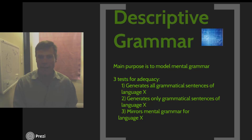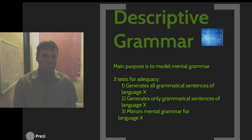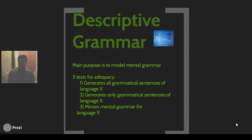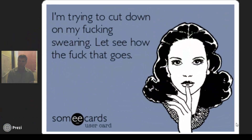It was only in about the last three decades where we find really serious research into taboo words and swearing. And so before that, because of that neglect, no descriptive grammar could be considered adequate. In order for it to be adequate, we need to be able to consider sentences like, 'I'm trying to cut down on my fucking swearing. Let's see how the fuck that goes.' There we've got two things: 'that fucking swearing,' which is a really interesting construction we'll talk more about later in the course.